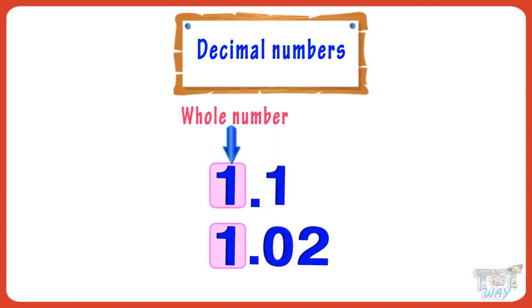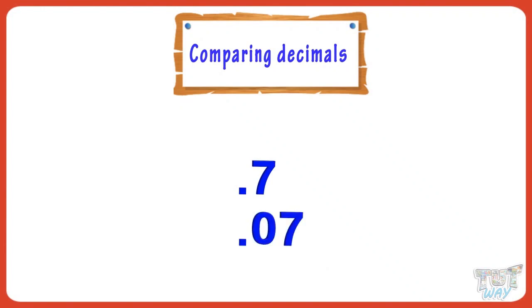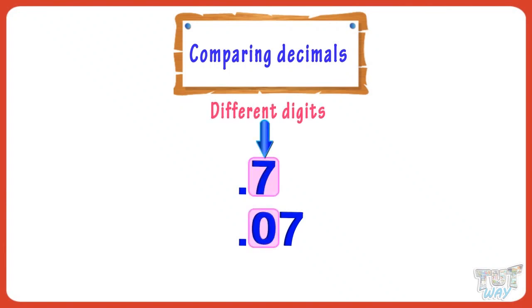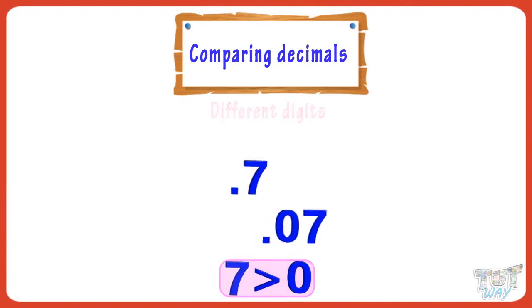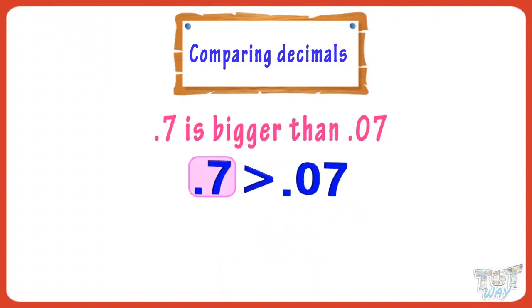Now, let's take an example. Let's compare 0.7 and 0.07. We have to start at the left and look for the first place where the digits are different. Here, the leftmost digits are different. So, comparing seven and zero, we get 0.7 is bigger than 0.07.